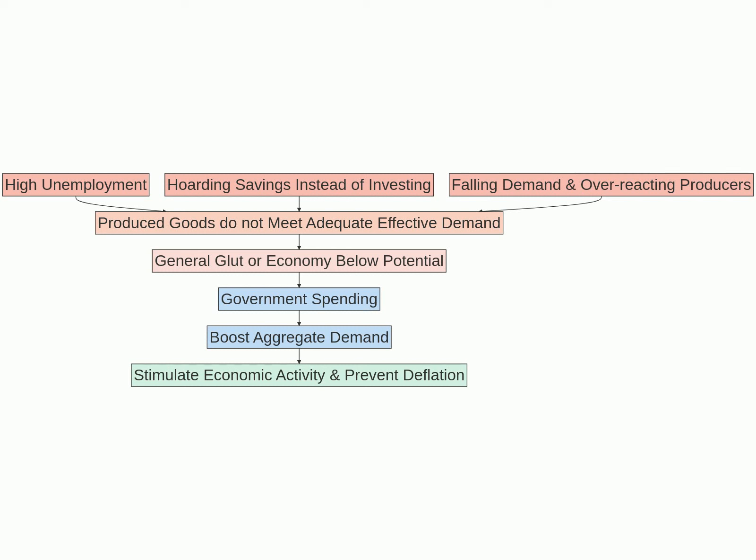or an economy operating below its potential. To counteract this, Keynesian theory proposes government intervention to stimulate demand. Government spending can boost aggregate demand and stimulate economic activity. This can in turn help to reduce unemployment and prevent deflation, stabilizing the economy.